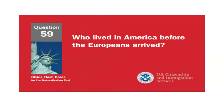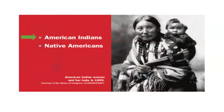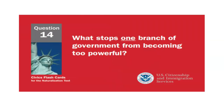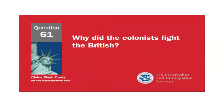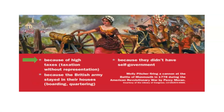Who lived in America before the Europeans arrived? American Indians. What stops one branch of government from becoming too powerful? Checks and balances. Why did the colonists fight the British? Because of high taxes.